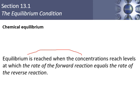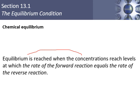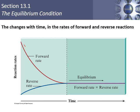Equilibrium is reached when the concentrations reach levels at which the forward and reverse rates are equal — going at the same rate forward as in reverse. The forward rate starts off high and drops until it levels off, and the reverse rate starts at zero and picks up until it levels off. When they both level off, they're at the same level.